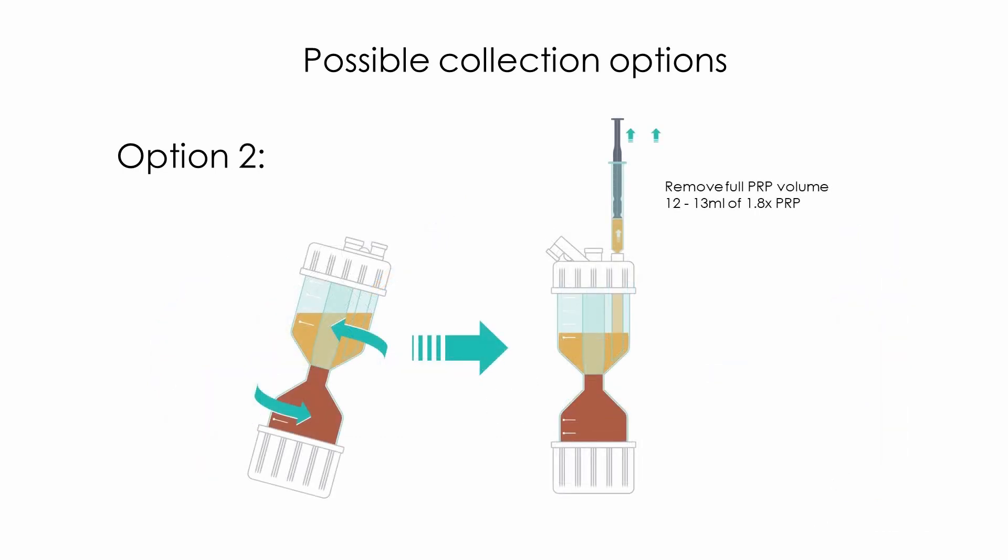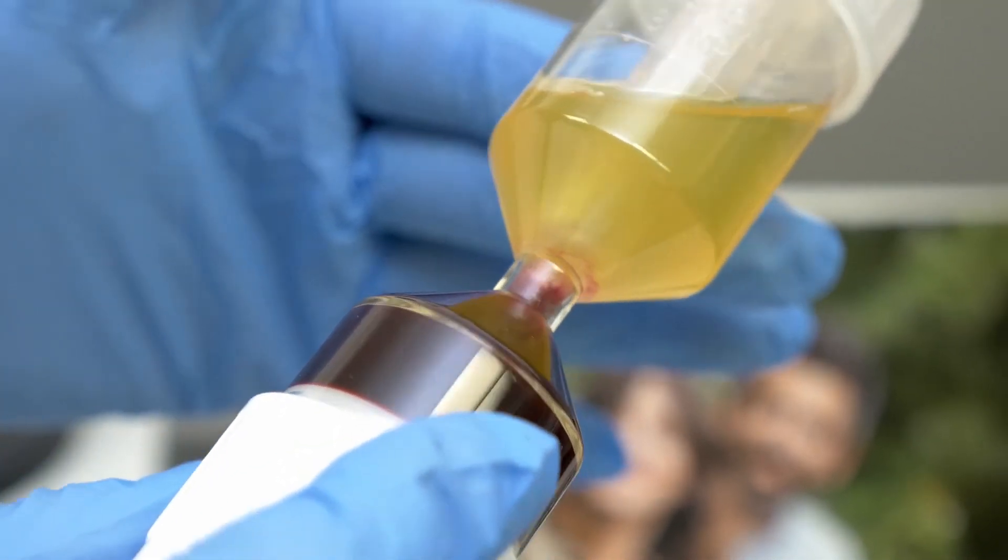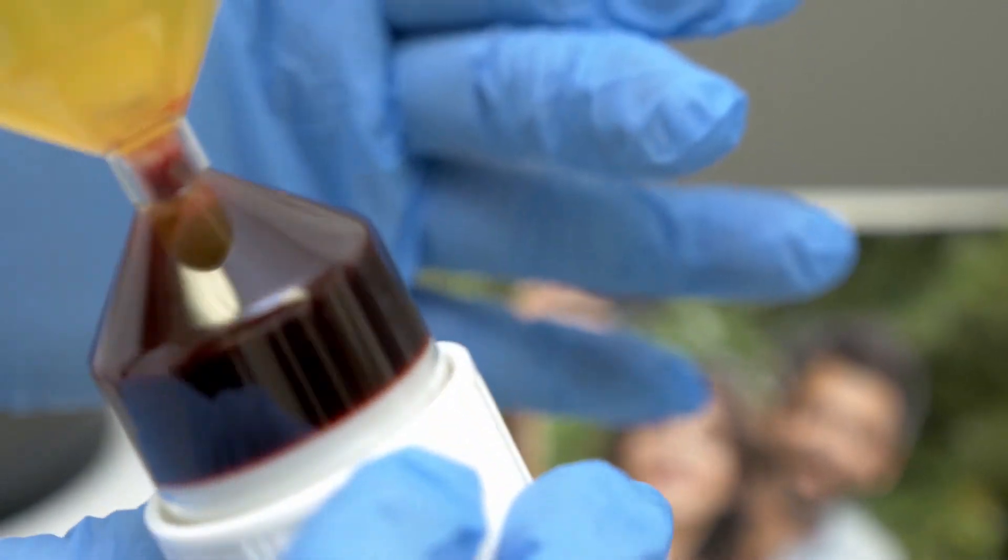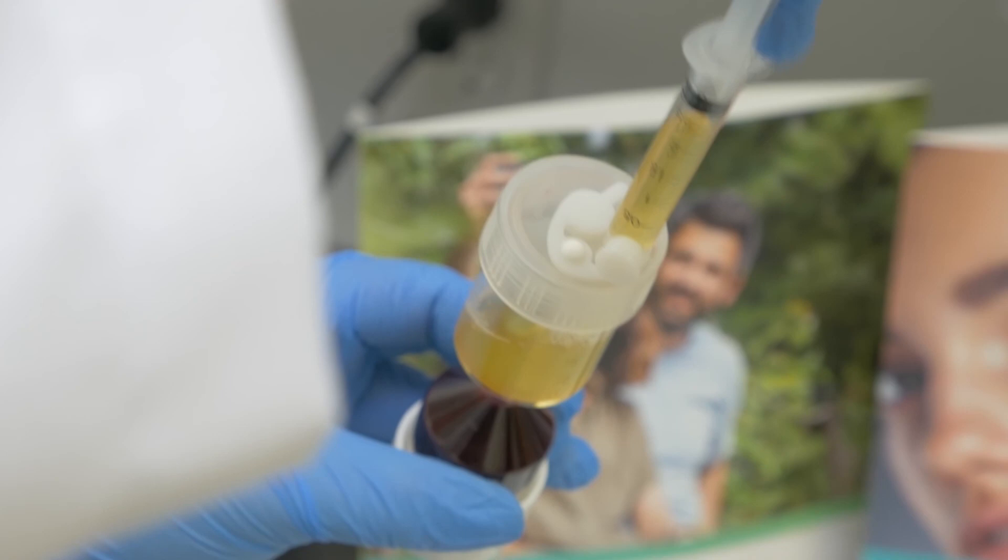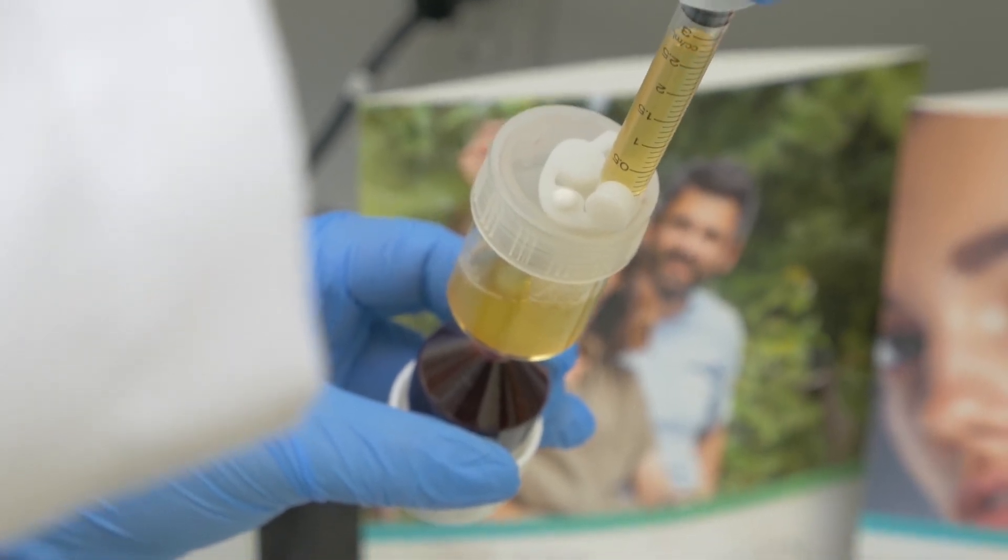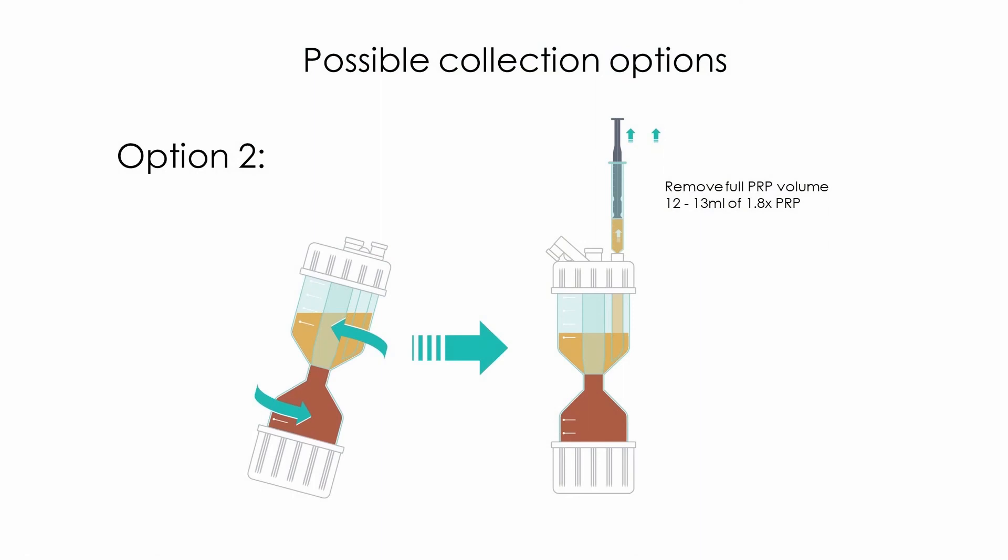Option two. When a higher volume of PRP is needed, 12 to 14 mls at a 1.8 times concentration, gently swirl the PRP tube to mix the PPP, PRP and buffy coat. Then aspirate the full volume of PRP preparation through the outer port into the selected syringes. Your PRP preparation is now ready for use.